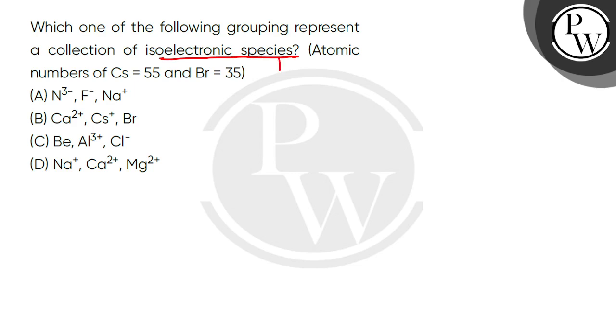Isoelectronic species are those which have the same total number of electrons.